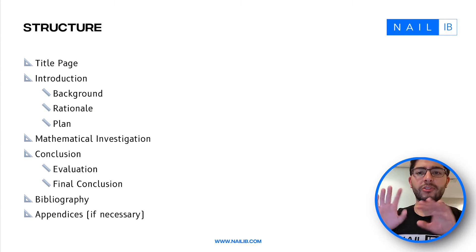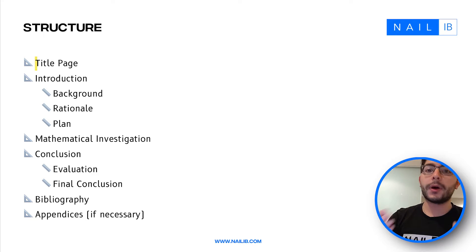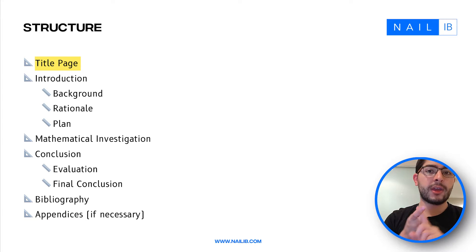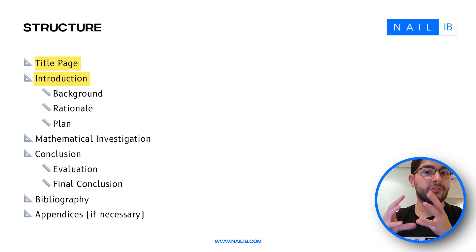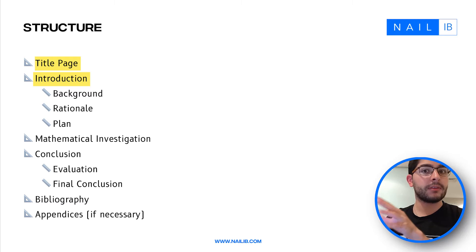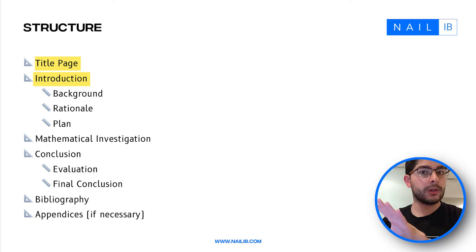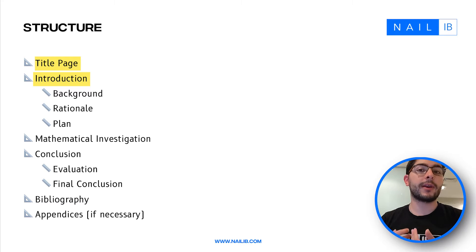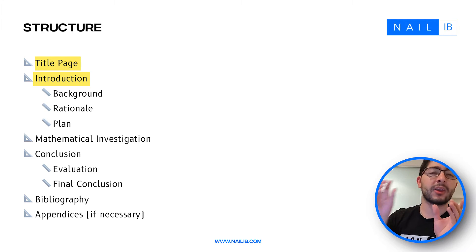In terms of structure, this is just a general skeleton — I'll go into more detail in a future video. First, you have a title page, which should include the page count and the title of the IA. You also have an introduction containing a background, rationale, and plan. Note that this structure is not set in stone; it's a suggestion that I think will best exploit the marking criteria.